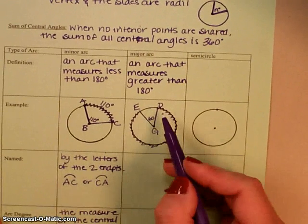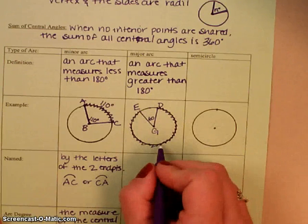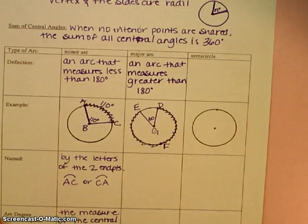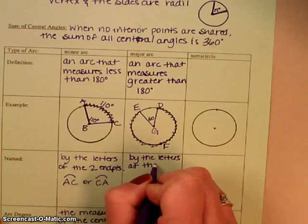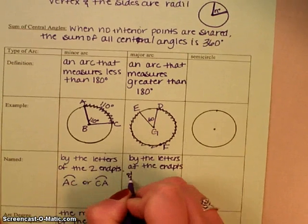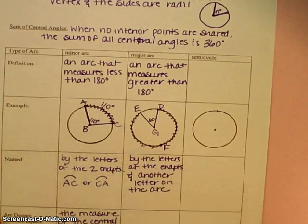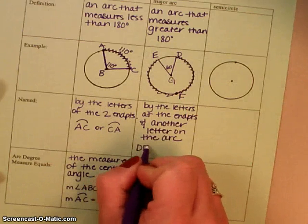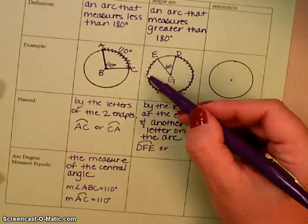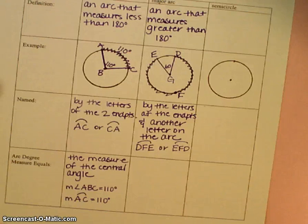Now, when you name a major arc, we don't just want to use the endpoints because if I say DE, well, that could be this little arc here too. So how am I supposed to know? So what we're going to do is, I'm going to put another point on here. So I'm going to put an F on there. So when we name a major arc, yes, we are going to name it by the letters at the endpoints and another letter on the arc. And we're going to go right in order. So if I were to trace this arc, I could call it D-F-E. Or I could call it E-F-D. So either one, but just make sure that you trace it and you put those letters in order. I mean, you could reverse them, of course, but just make sure that you put them in order as they go around the arc.